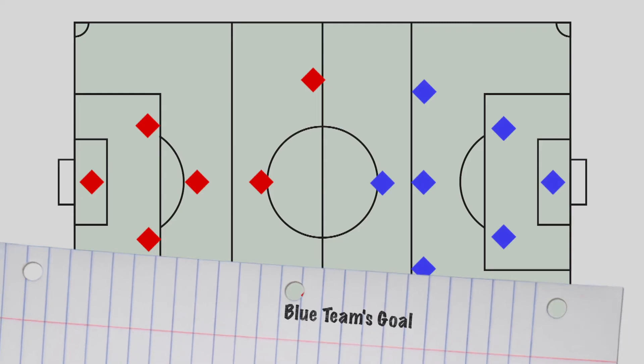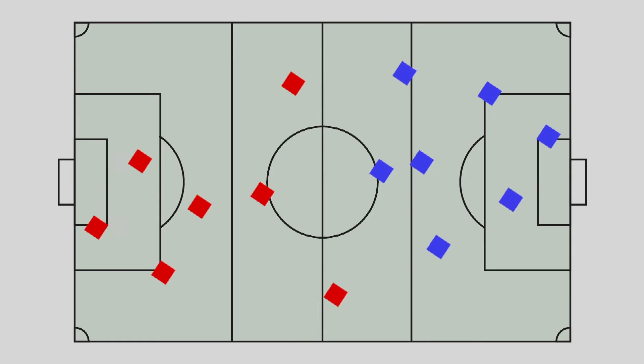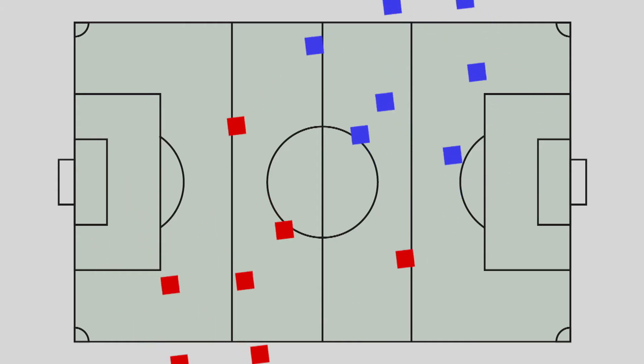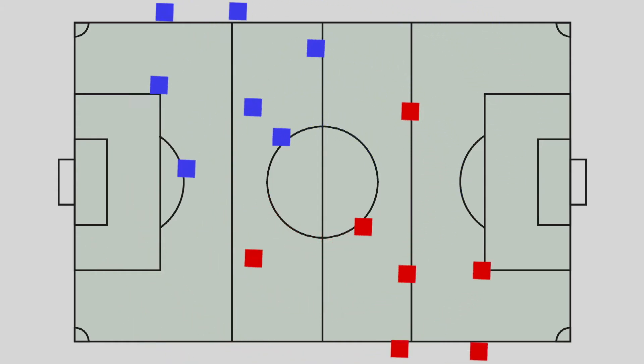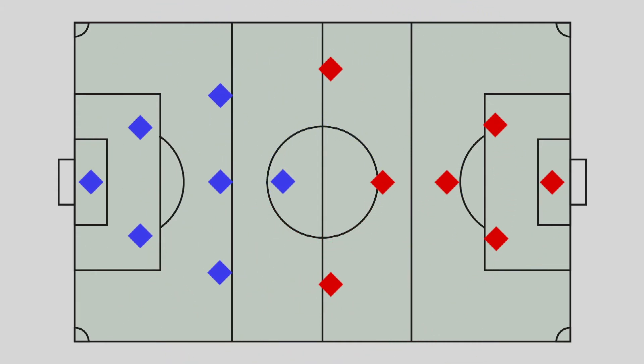A soccer game is divided into two halves with a break in between them. The teams switch sides of the field for the second half. For instance, if the red team was defending the left goal and trying to score in the right goal during the first half of the game, they would turn around to defend the right goal and attempt to score in the left goal during the second half of the game.